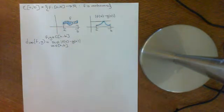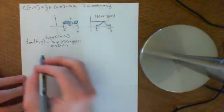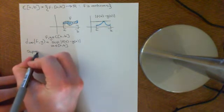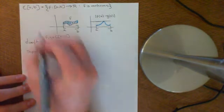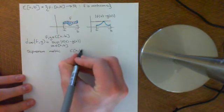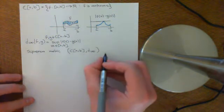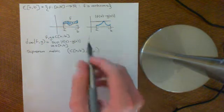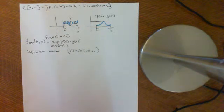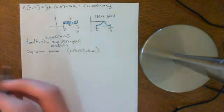So this is the supremum metric on this set, and it creates a metric space. C[a,b] along with this metric D-infinity does form a metric space, as we checked previously. Now what we want to do is get some more intuition for what it means for a sequence of continuous functions in C[a,b] to converge to a limit within this metric space.